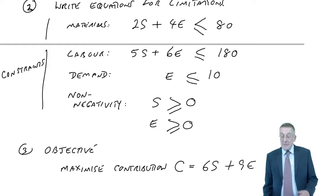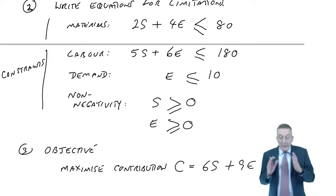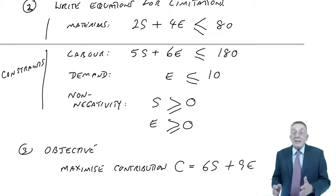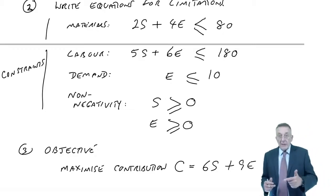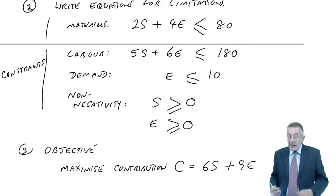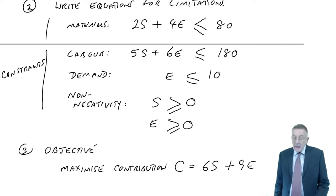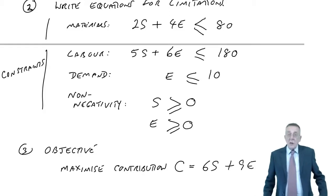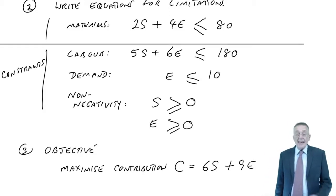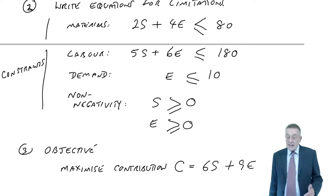If you remember, presumably we've only just watched the previous lecture. But in the previous lecture, we set up the problem. S was the number of standard chairs, E is the number of executive. We set up the equations for limitations, and we set up an equation for the objective. But of course, we've now got to go about solving it and getting answers for S and E.